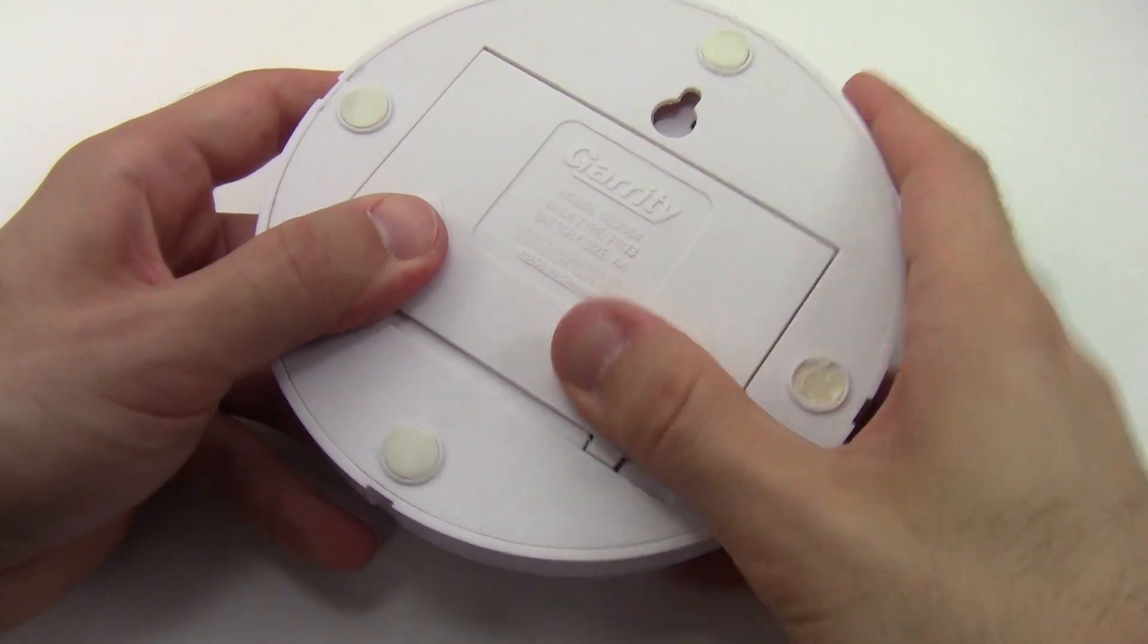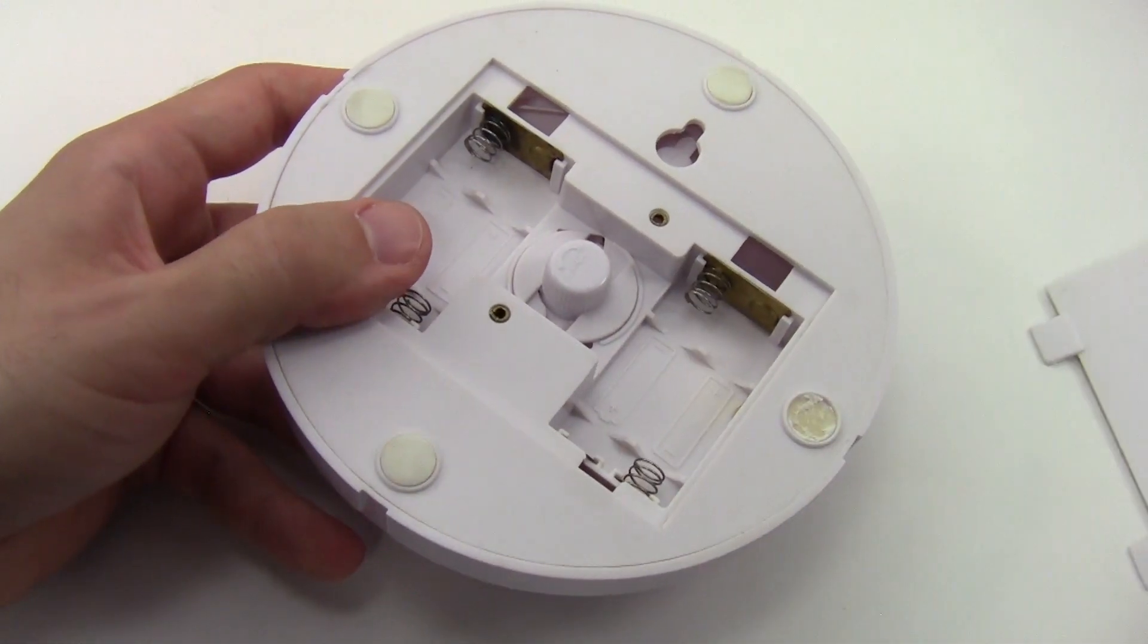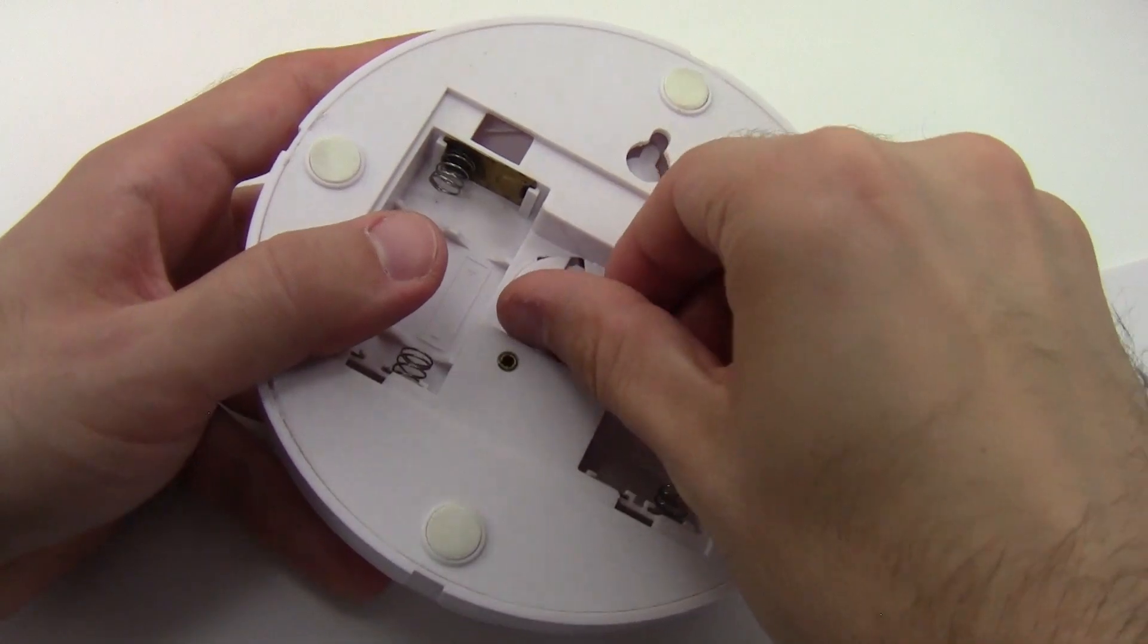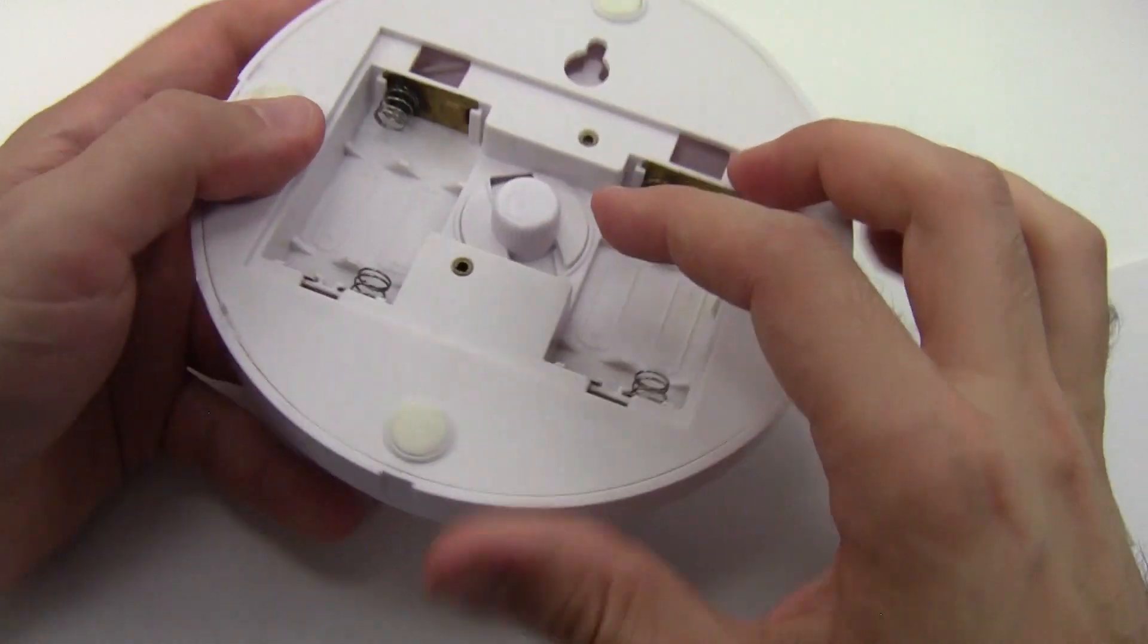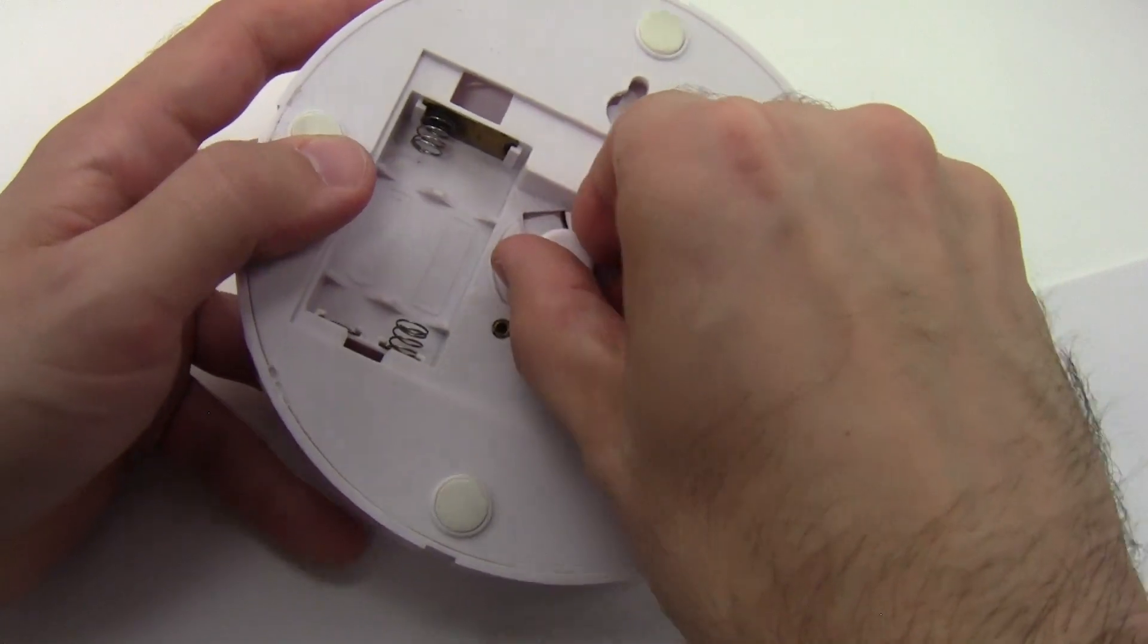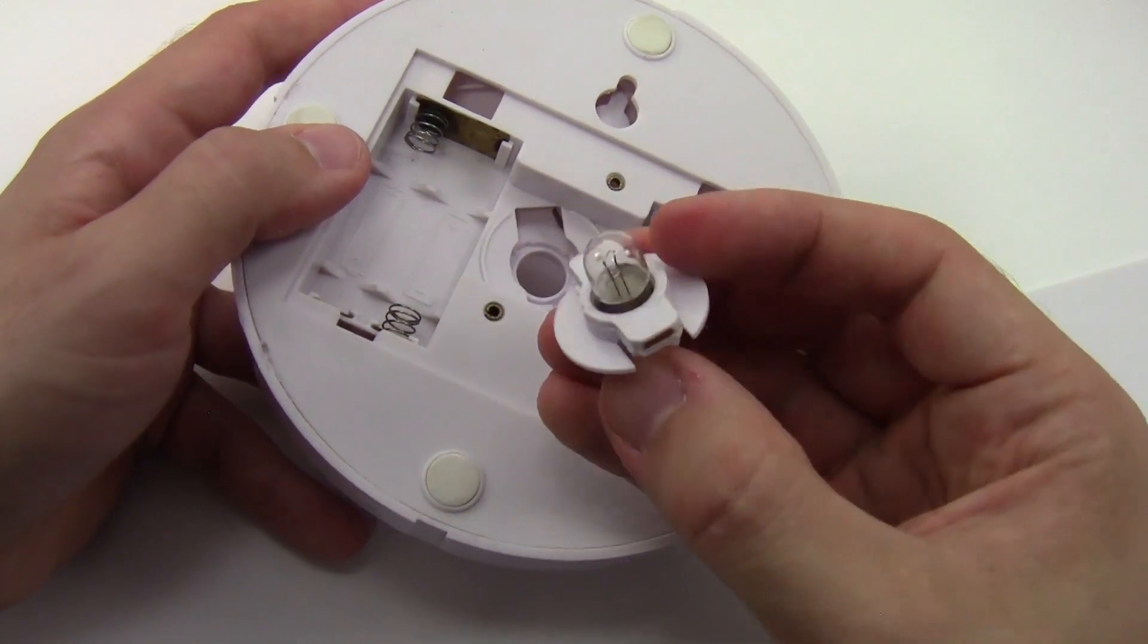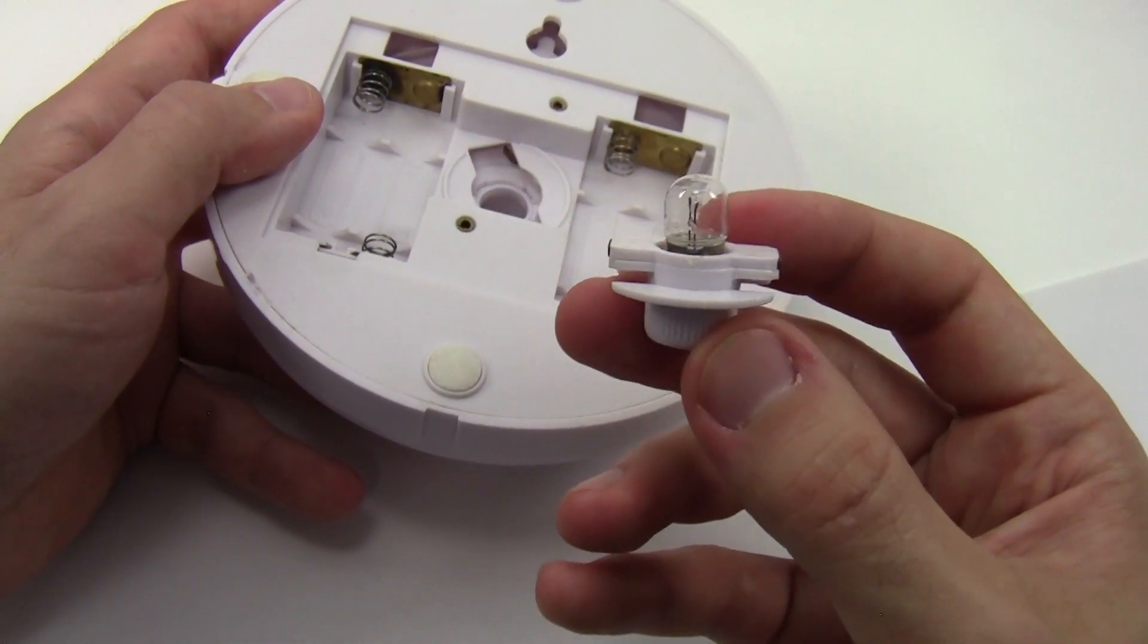Now before we go any further, I should mention that everything I'm showing you in this video will also work for a light with an incandescent bulb. For example, here I have one that looks similar from the outside, has a 4xAA battery pack, but when I open it up on the inside, instead of an LED and a resistor, it has a little incandescent bulb holder.